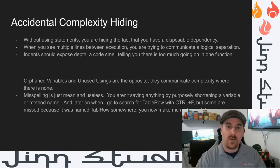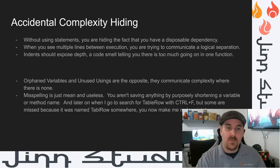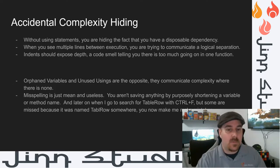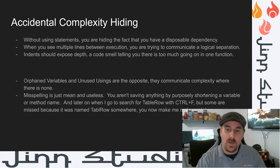Those intern mistakes are a form of complexity hiding. Without 'using' statements, you are hiding the fact that you have a disposable dependency and may even need a factory to make that dependency mockable. When you see multiple lines between execution, you are trying to communicate a logical separation of functionality instead of just making a semantic method to describe a piece of functionality. Indentation should expose depth — another tool to tell yourself that you should split code into semantic functions. Messing up indentation is another way to hide that complexity. Orphan variables and unused usings communicate complexity where there is none. I frequently find 20-line methods that were too complicated to refactor because of orphaned variables, where that method could be refactored into one or two lines.